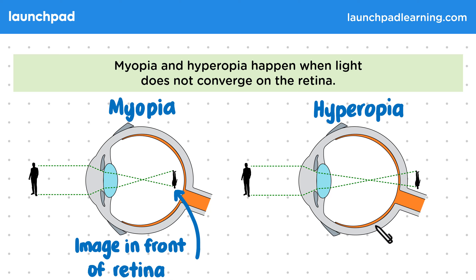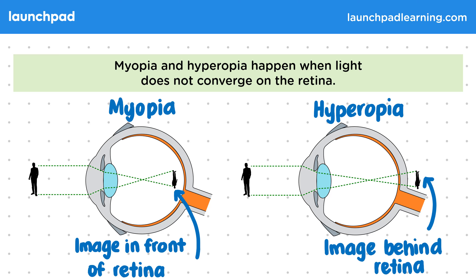However, in hyperopia, there hasn't been enough refraction. As a result, the image forms behind the retina. There's a variety of causes for each of these eye conditions — for example, the length of the eye being too short or too long, or the shape of the lens or cornea being too thin or too thick.